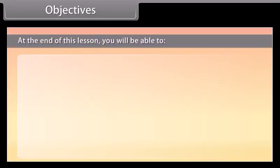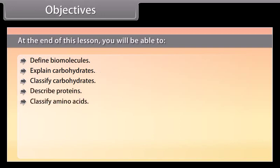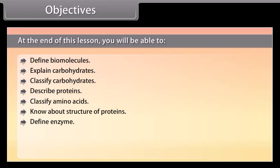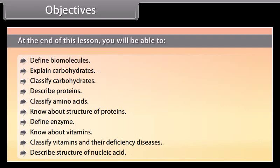Objectives. At the end of this lesson, you will be able to: define biomolecules, explain carbohydrates, classify carbohydrates, describe proteins, classify amino acids, know about the structure of proteins, define enzyme, know about vitamins, classify vitamins and their deficiency diseases, and describe the structure of nucleic acid.